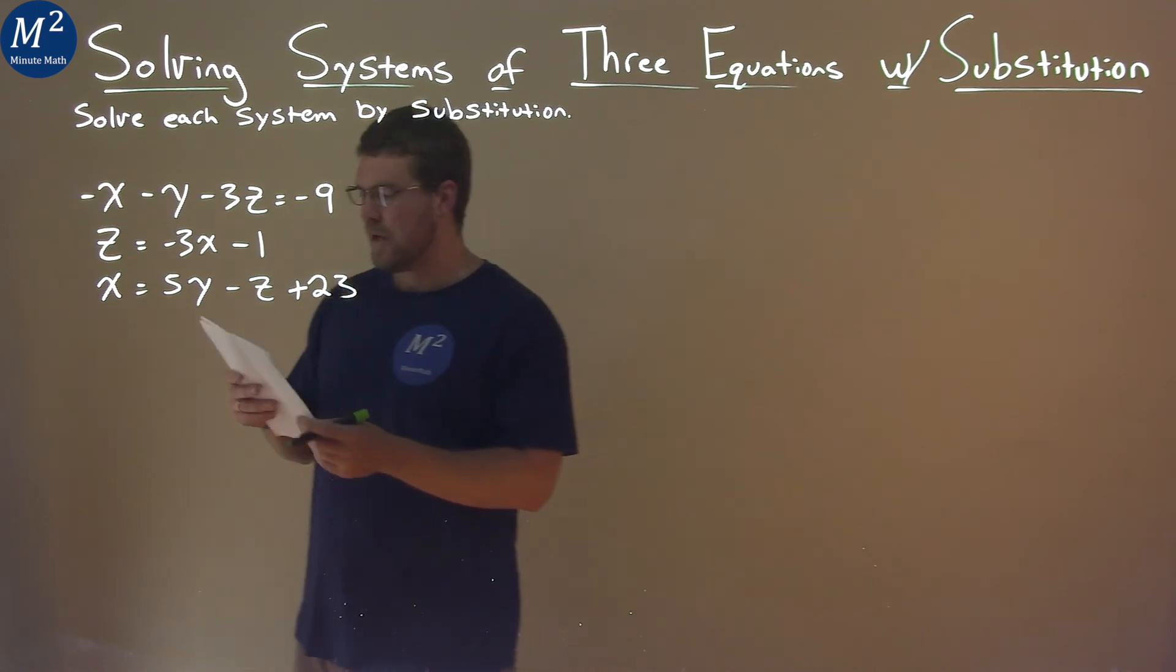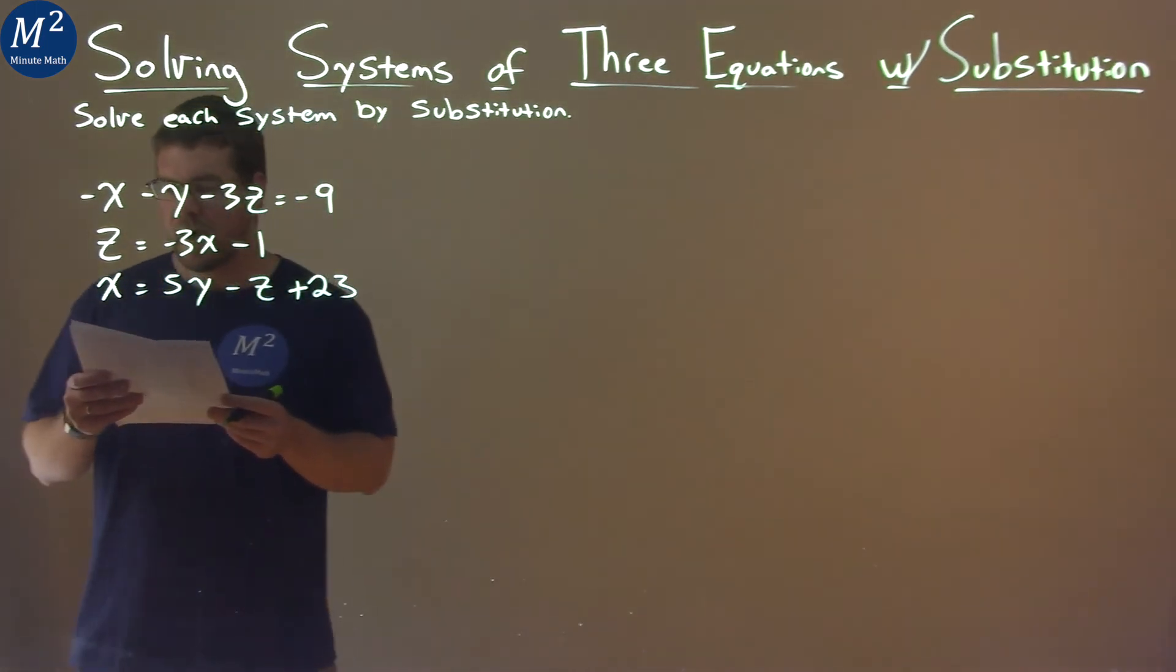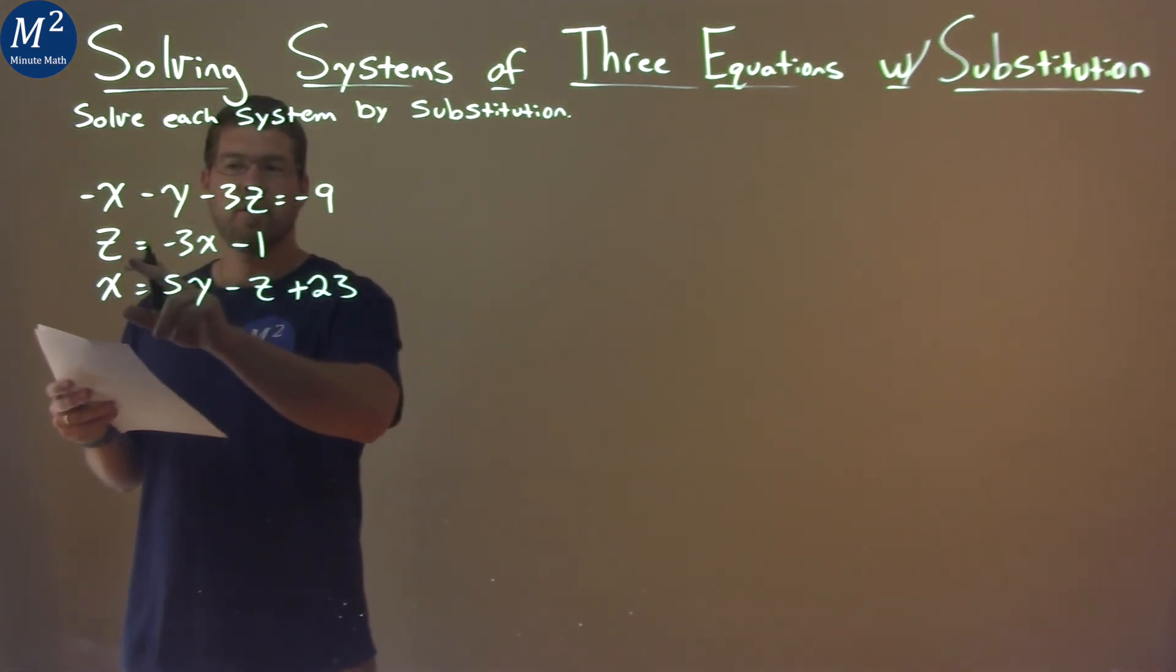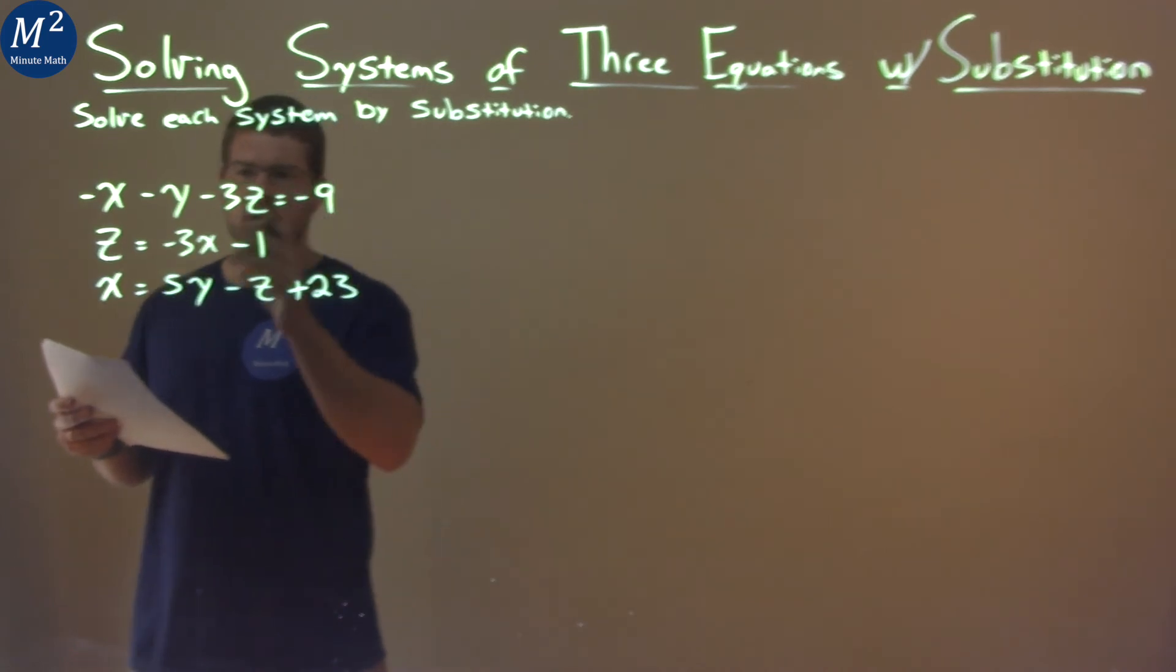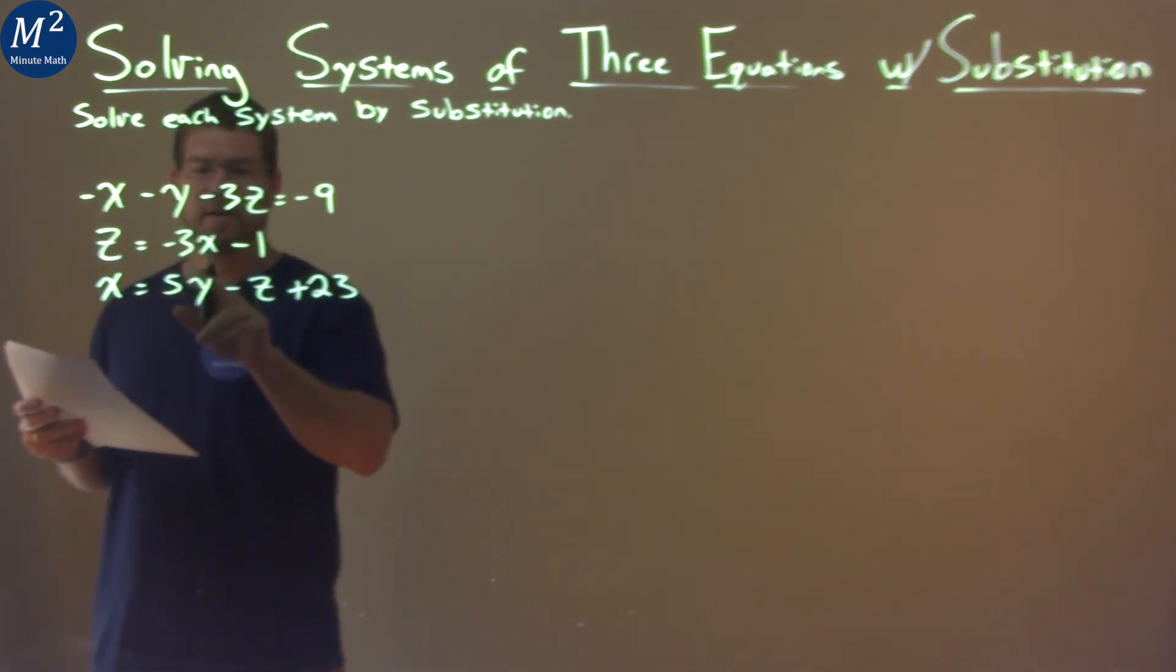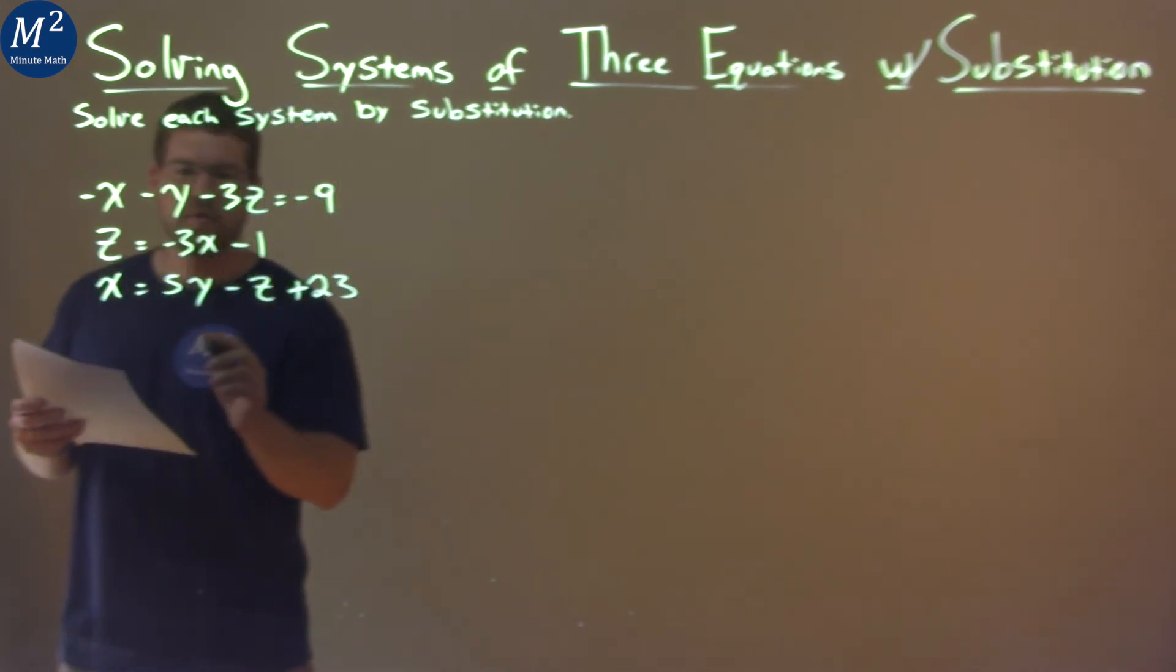First thing I'm looking at, I see we have a z by itself already and it's equal to one variable, the x, or in terms of x. So what I'm going to do is take the third equation and for z I'm going to put in negative 3x minus 1. Let's do that.